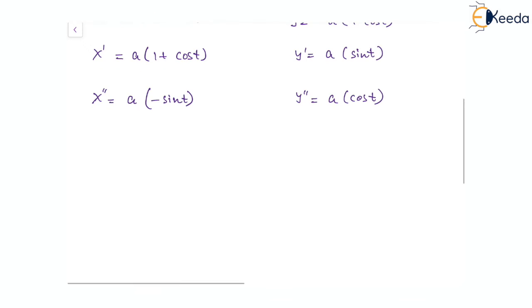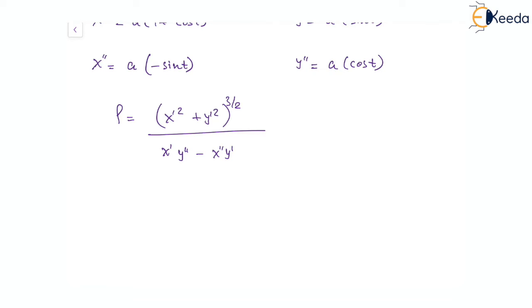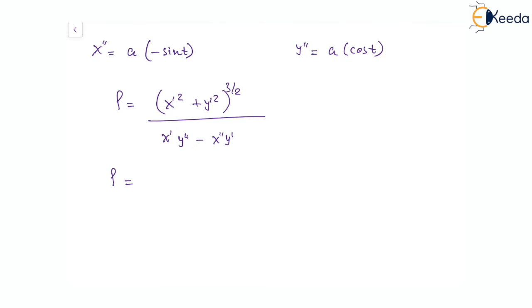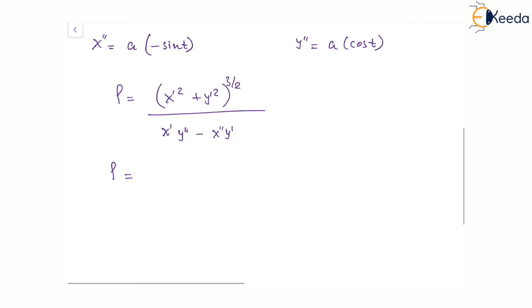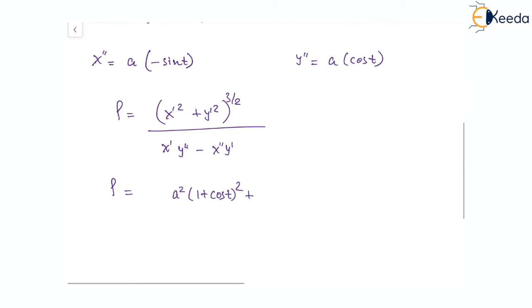Now for the radius of curvature, rho equals x-dash squared plus y-dash squared to the power of 3 by 2, divided by x-dash y-double-dash minus x-double-dash y-dash. Substituting values, the numerator becomes: a squared times of 1 plus cos t whole squared plus a squared times of sin squared t, all to the power of 3 by 2.